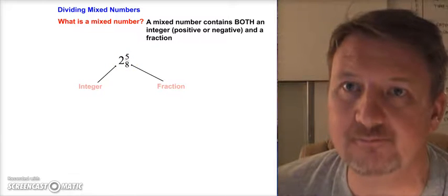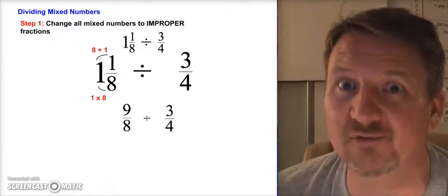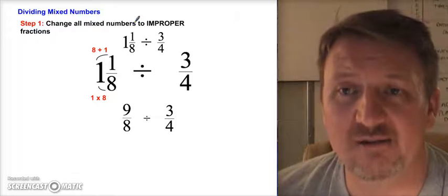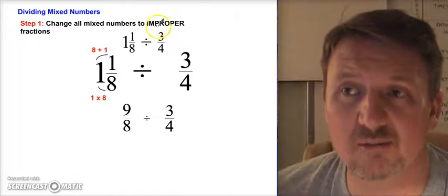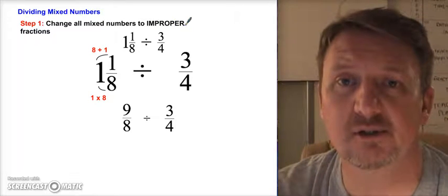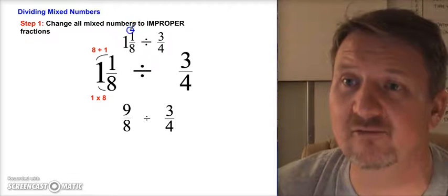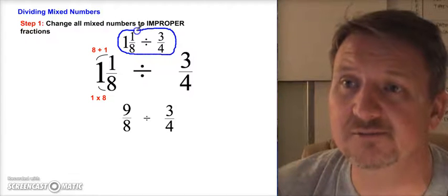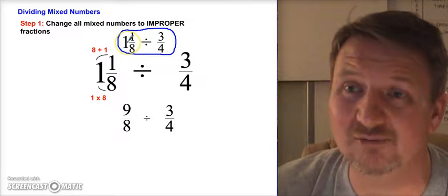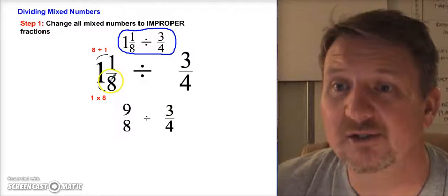Now let's look at an example of how to divide a mixed number. The first step is to change all the mixed numbers in your problem to improper fractions. My problem is one and one-eighth divided by three-quarters. I only have one mixed number, so I'm only going to change one. I can't change three-fourths — it's already a proper fraction.